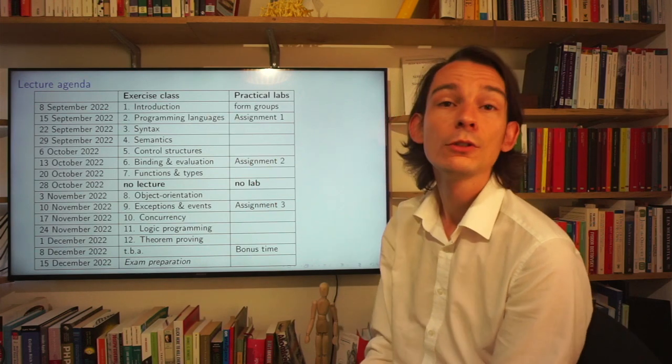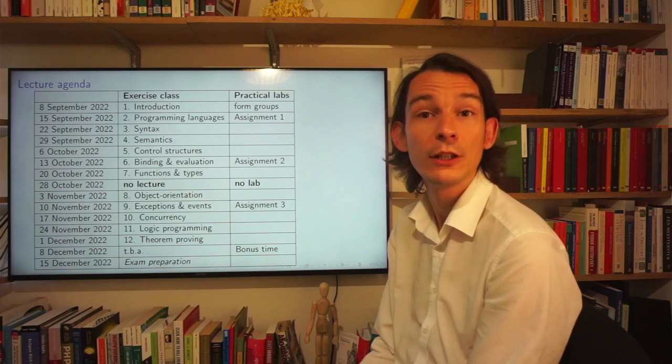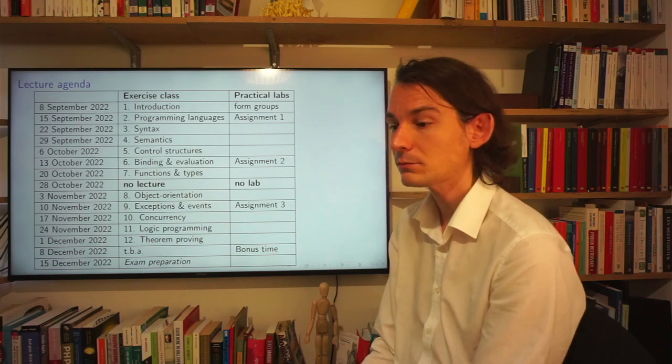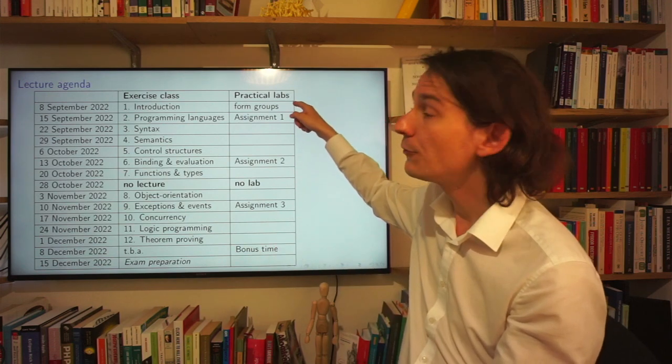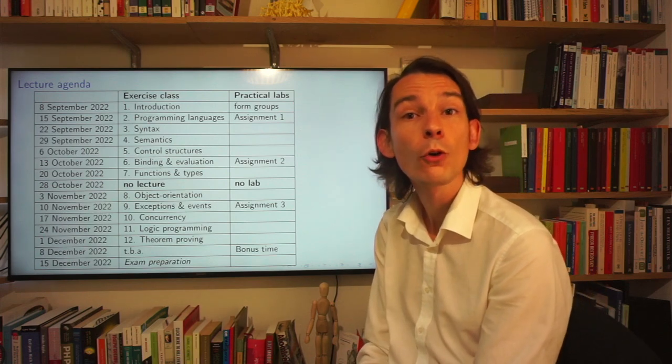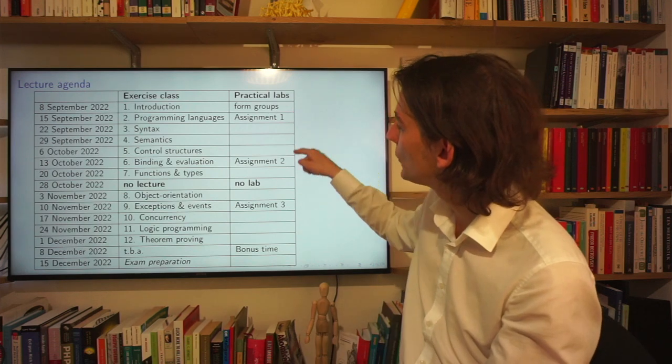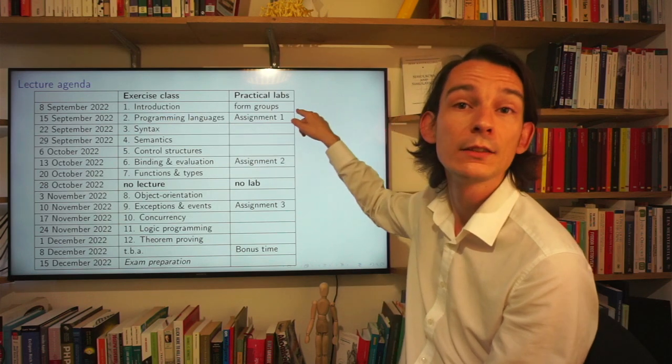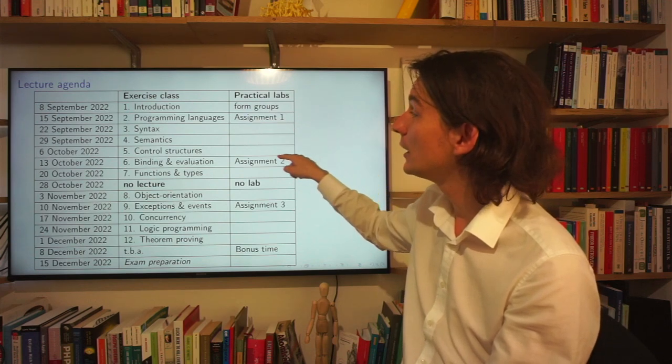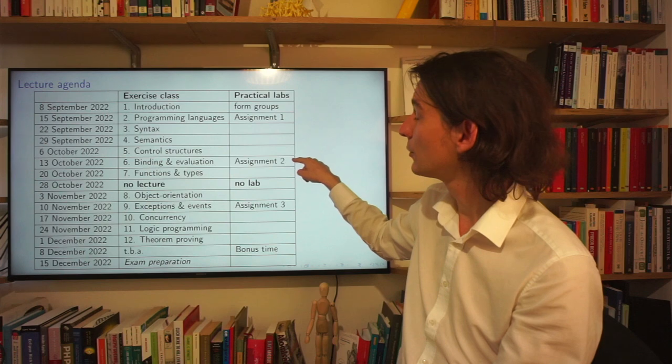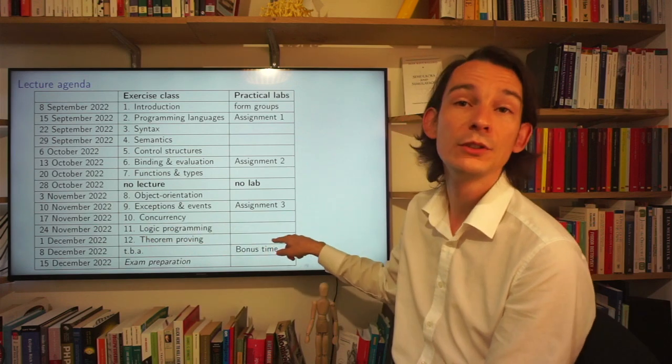Then, there are the practical labs, and during the practical labs you can work in groups finishing programming assignments. As you can see over here in the third column, the first practical lab consists of forming groups, and I will explain later more about that. And each of the assignments will be published at a certain date. So, the deadline for the first assignment will be 12 October, and the deadline for the second assignment will be 9 November, and the deadline for the third assignment will be 7 December.